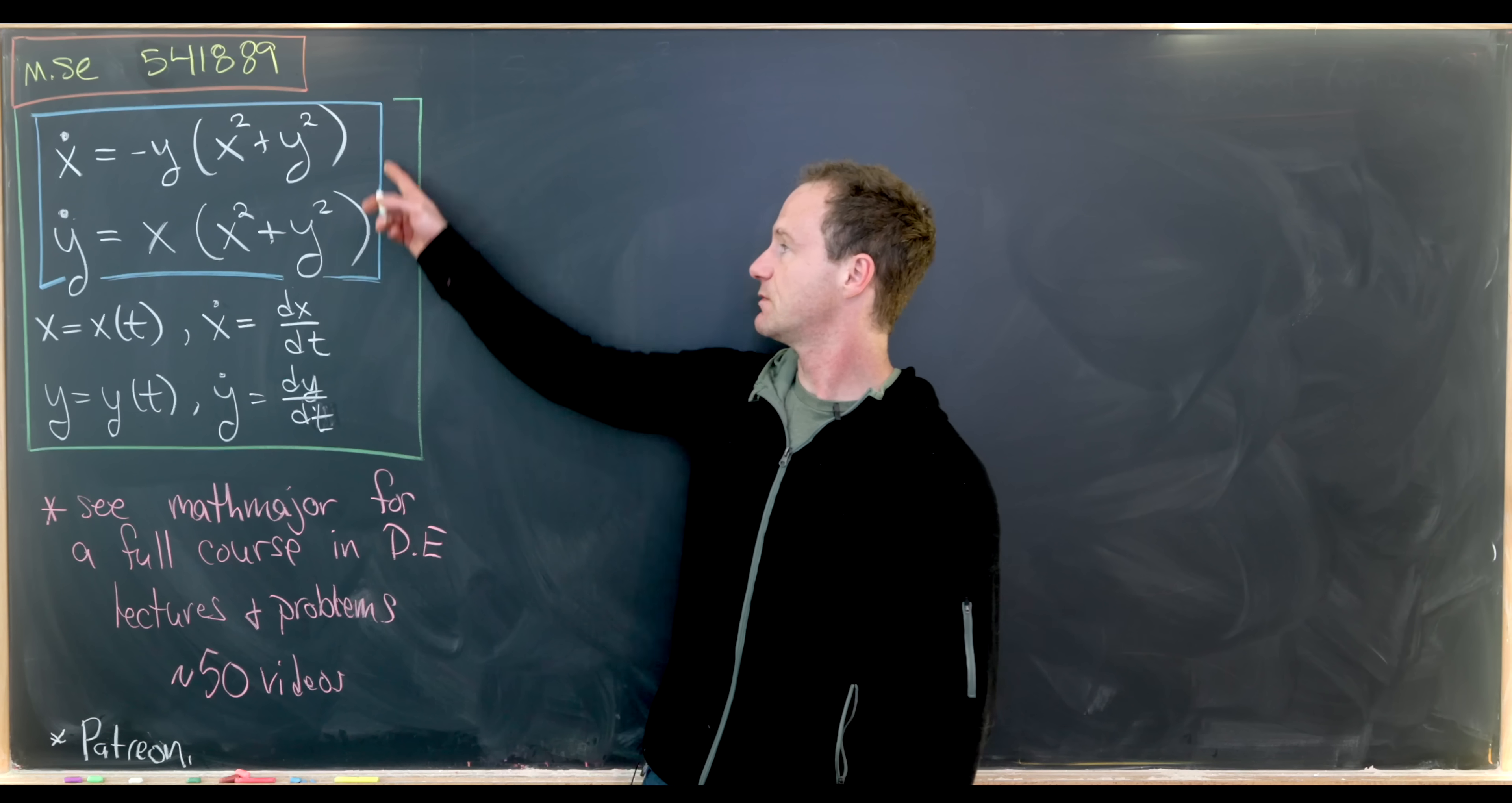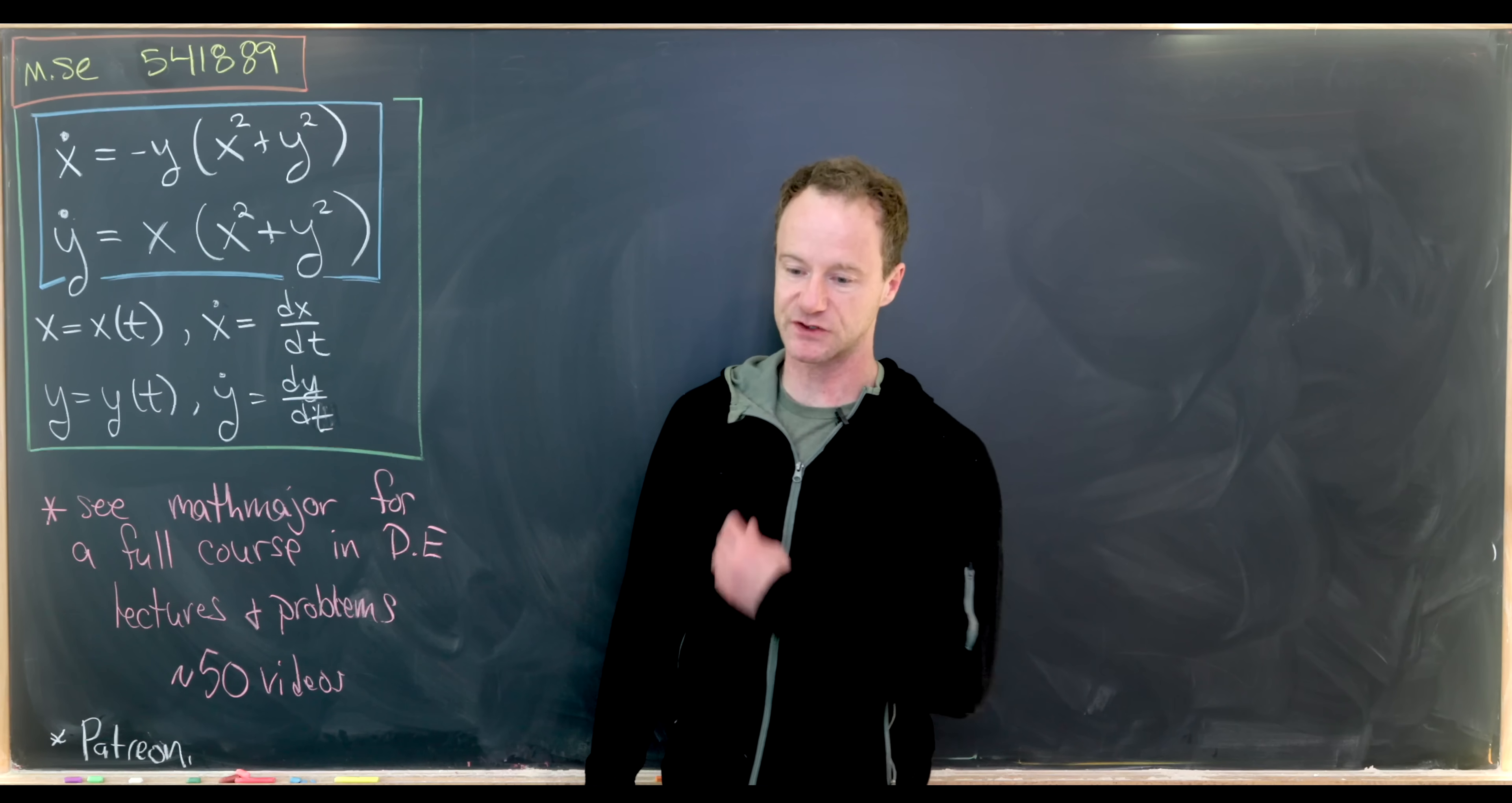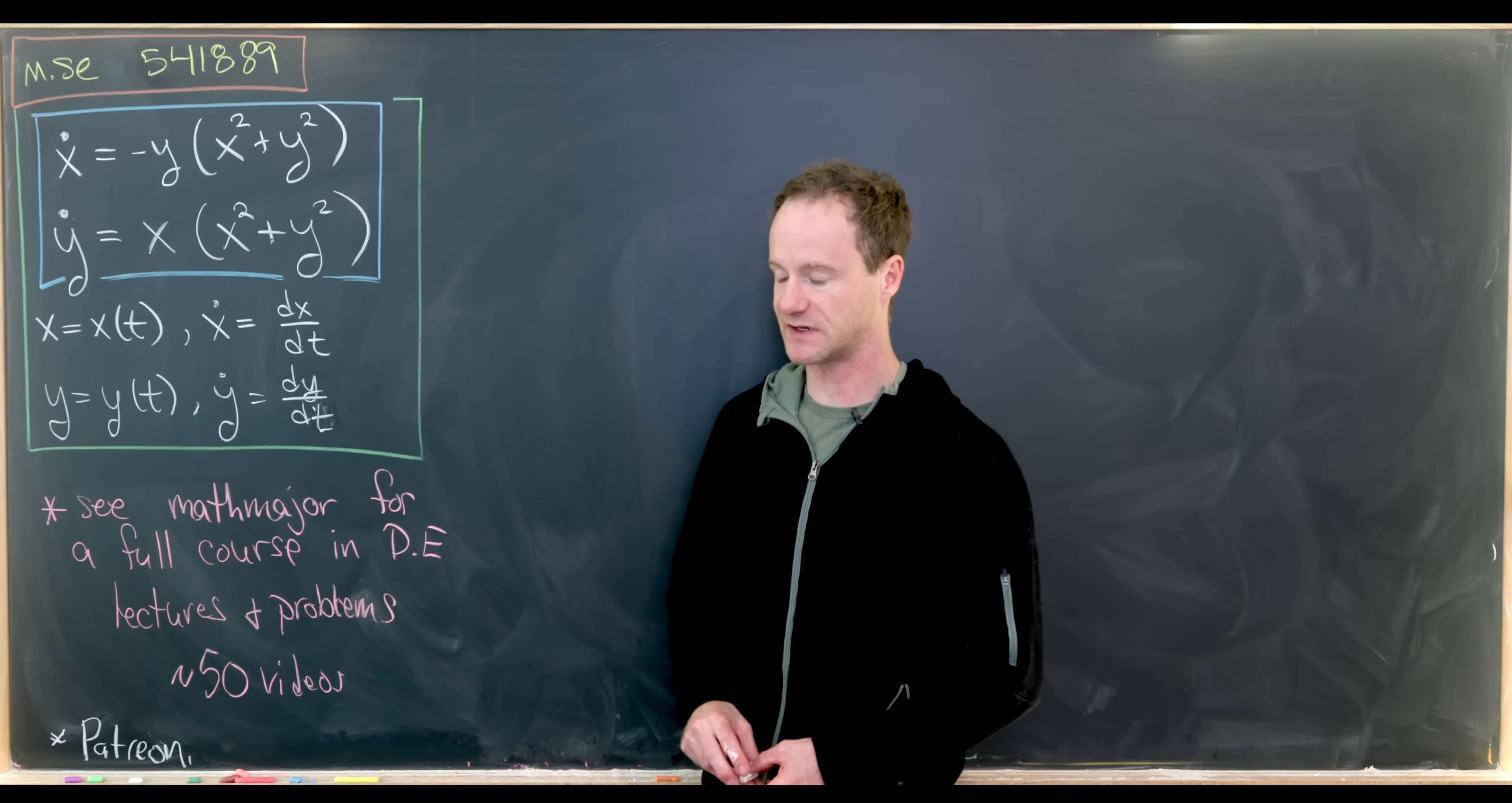Okay, so the system of differential equations is x dot equals negative y times (x squared plus y squared), and y dot equals x times (x squared plus y squared).